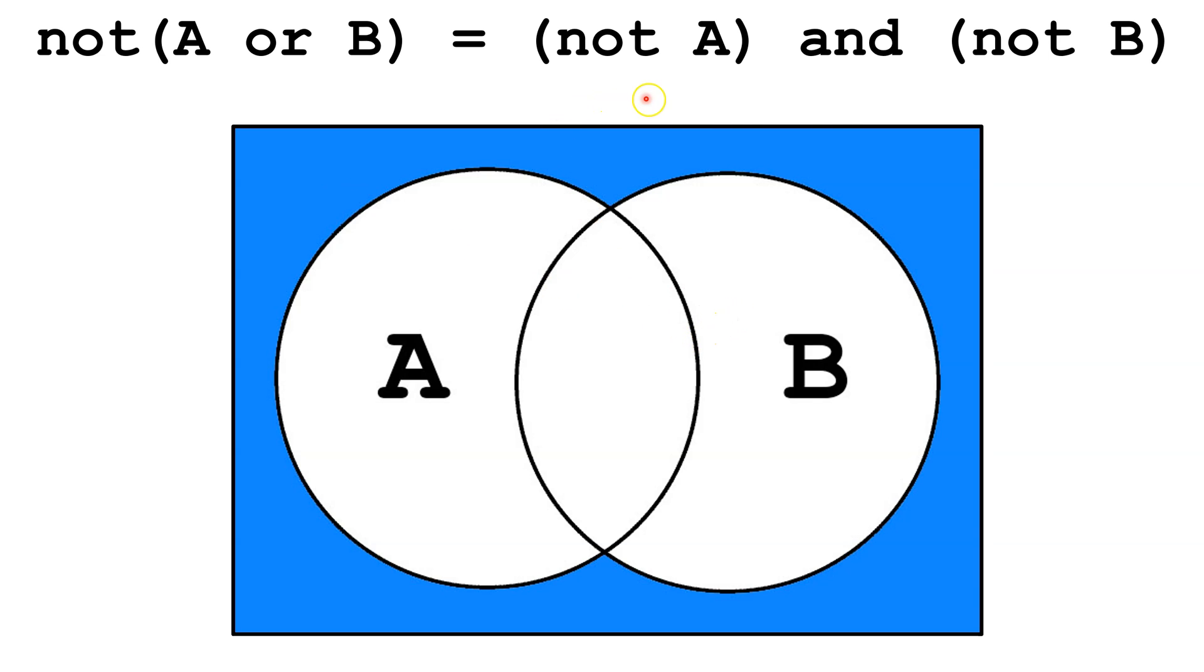And let's look at the equivalent, Not A and Not B. Well, everything outside of these two circles is Not A and it's also Not B. So we can say these two are equivalent.